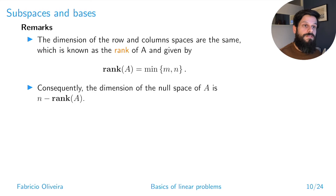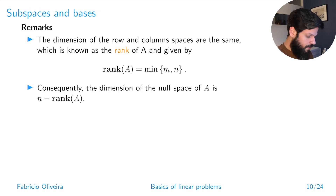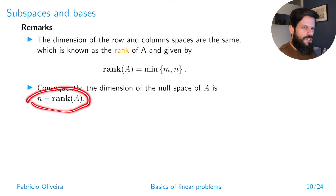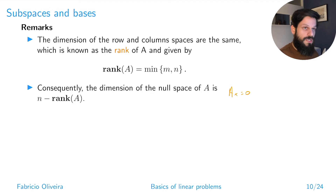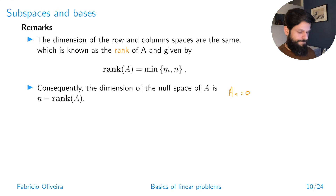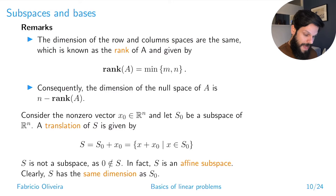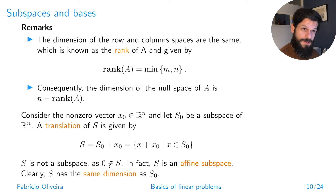If you have linearly dependent rows or columns, those are excluded from the rank count. The dimension of the null space relates to this: if your subspace has dimension m in R^n, there are n minus m vectors that could be orthogonal, and that's exactly the dimension of the null space — it holds all vectors perpendicular to your subspace.